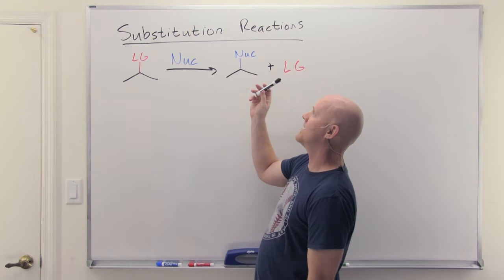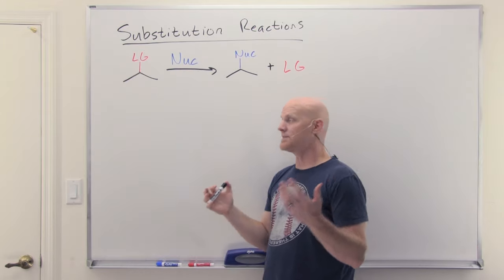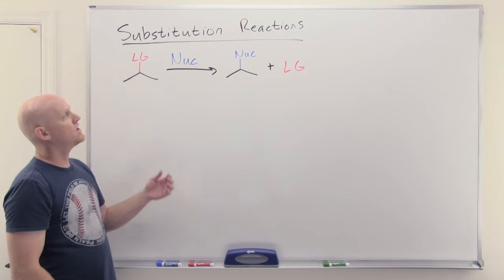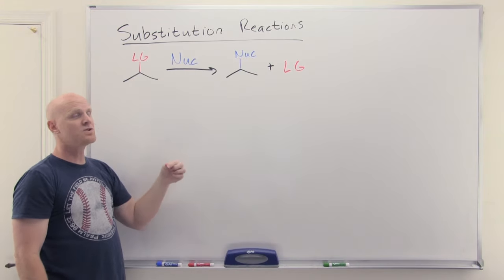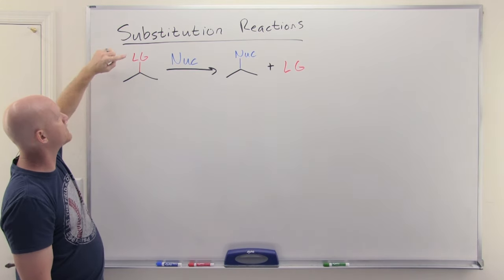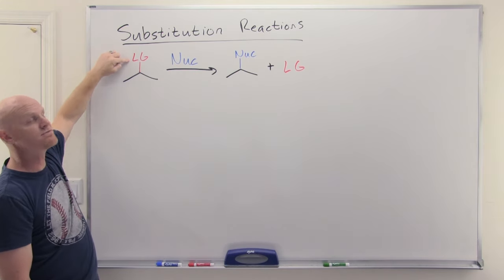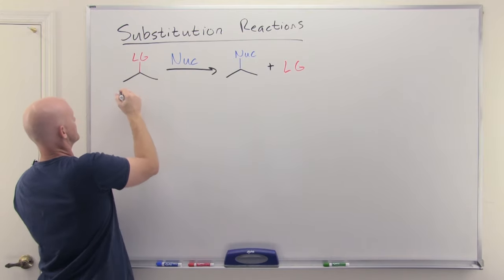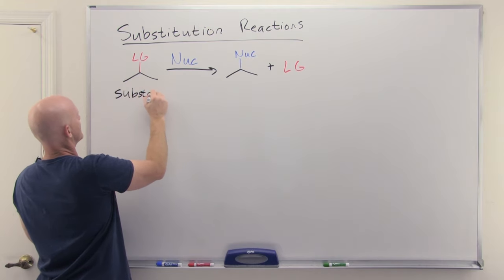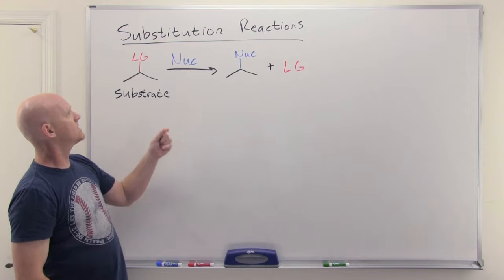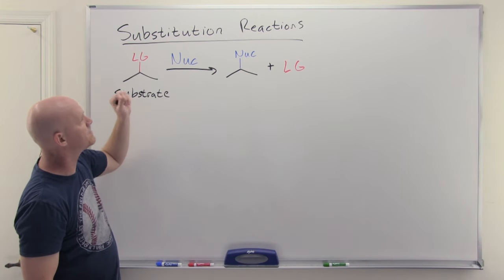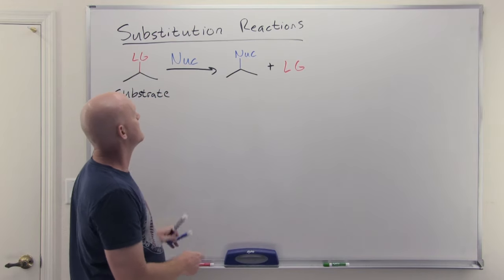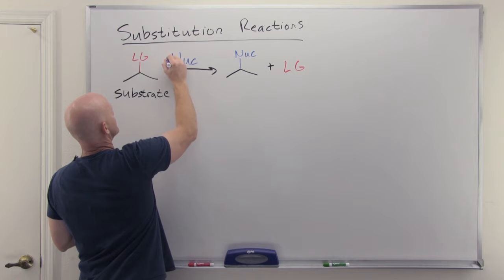Before we dive in, let's take a moment to discuss what a substitution reaction looks like and who the players are. These are called nucleophilic substitution reactions. The thing doing the replacing — the thing doing the substituting — is called the nucleophile, shown here in blue. What it replaces is abbreviated LG for leaving group. The reactant with the leaving group is often called the electrophile, or more commonly the substrate, which is the term I'll use. The nucleophile reacts with the substrate, replacing the leaving group, and the leaving group is kicked off on its own.